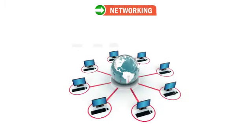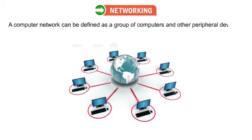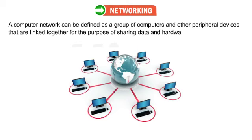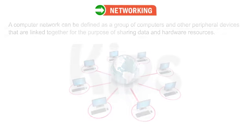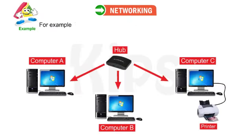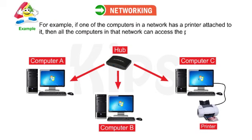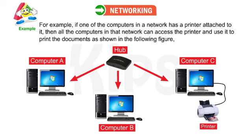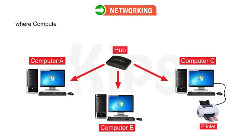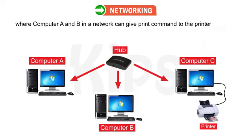A computer network can be defined as a group of computers and other peripheral devices that are linked together for the purpose of sharing data and hardware resources. For example, if one of the computers in a network has a printer attached to it, then all the computers in that network can access the printer and use it to print documents, as shown in the following figure, where computer A and B in a network can give print command to the printer attached with computer C.